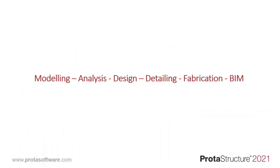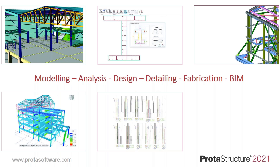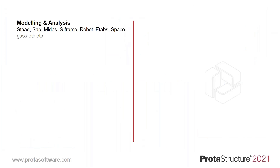As you can see, there's a lot involved: modeling, analysis, design, detailing, fabrication, BIM. It starts off with a green field but then goes through many stages. For this reason, different companies have developed different software for all these stages. Looking at the modeling and analysis step, there are dedicated software packages — you must have heard of names like STAAD, SAP, MIDAS, S-Frame, Robot, ETABS, and many hundreds of others, some more popular than others.